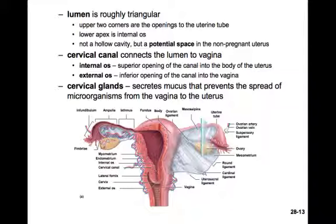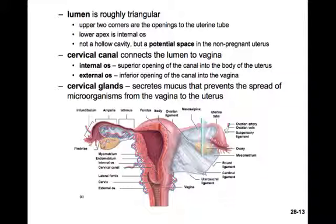The cervical canal is a narrow passageway connecting the vagina to the uterus. It has an internal os at the upper opening and an external os at the distal end. Glands at the cervix secrete mucus that prevents the spread of microorganisms from the vagina into the uterus.